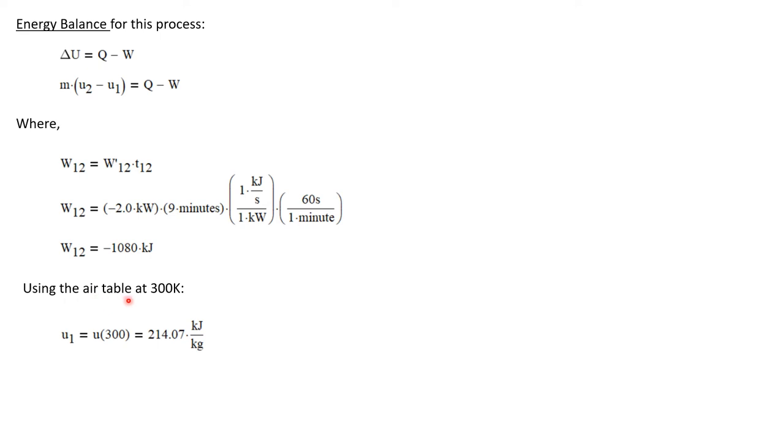Now using the air table at state one, which is at 300 degrees Kelvin, we notice that because air is an ideal gas, we only need one property to determine U or H and that is the temperature. So U1 is the table value at 300 degrees K, which is 214.07 kilojoules per kilogram.